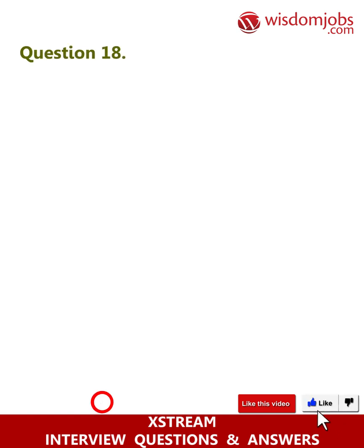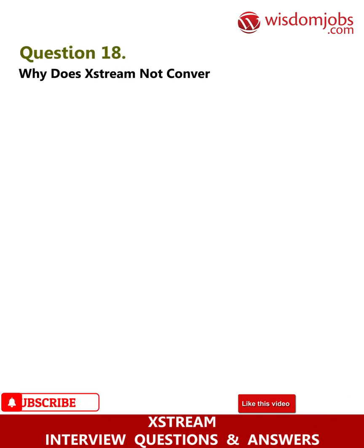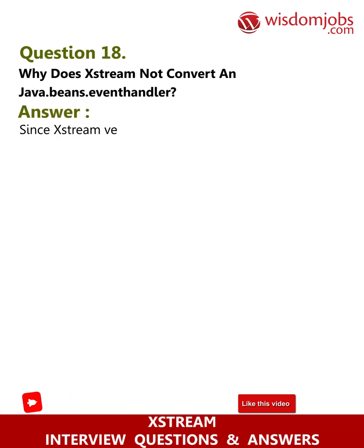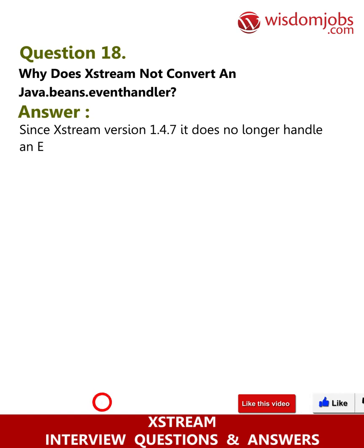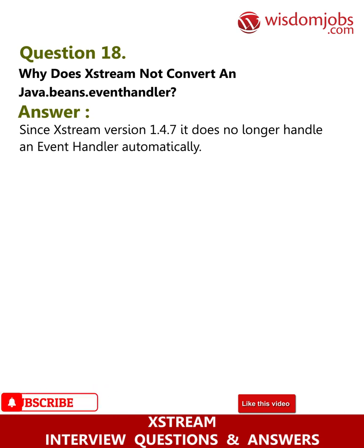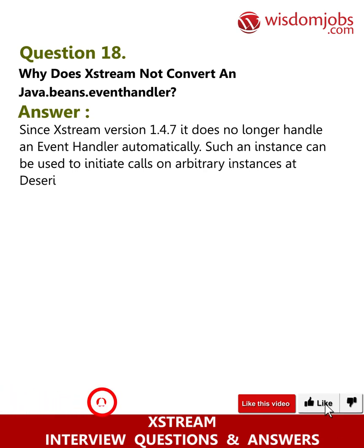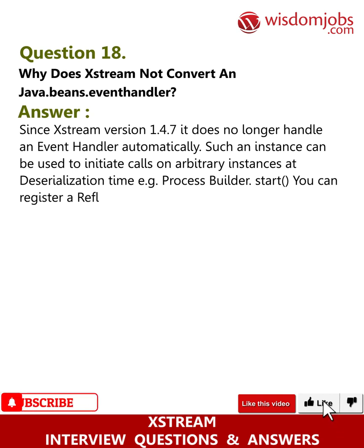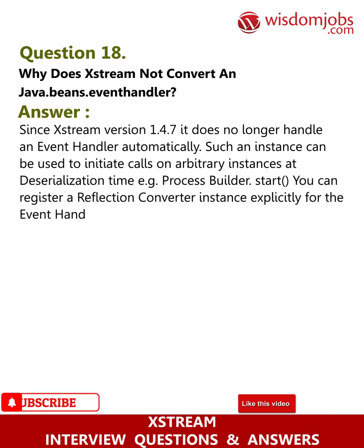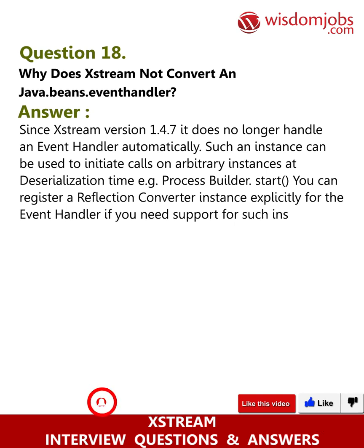Question 18: Why does XStream not convert java.beans.EventHandler? Answer: Since XStream version 1.4.7, it no longer handles an EventHandler automatically. Such an instance can be used to initiate calls on arbitrary instances at serialization time — for example, ProcessBuilder.start(). You can register a ReflectionConverter instance explicitly for the EventHandler if you need support for such instances.